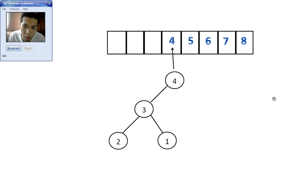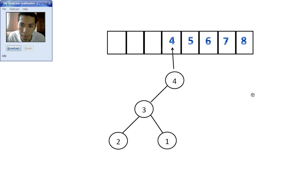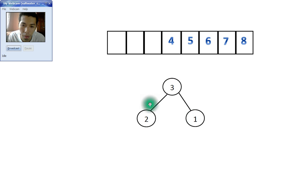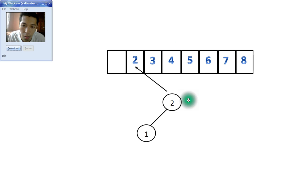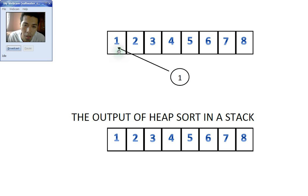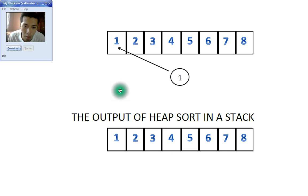We evaluate again. 4 will now be placed at the next stack position, since 3, 2, and 1 are all in the correct order — basically a correct descending arrangement in the tree. So 3 will be placed, then 2, then 1 at last. The final output of Heapsort in the stack is: 1, 2, 3, 4, 5, 6, 7, 8. That's the pattern of Heapsort.